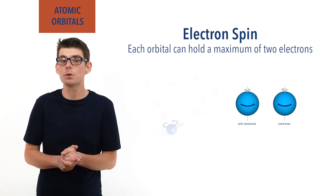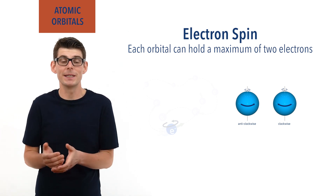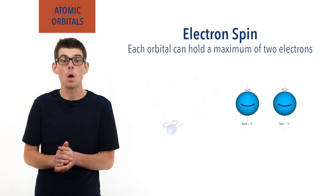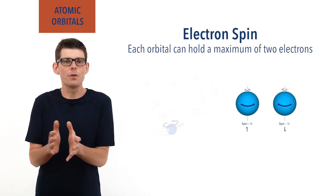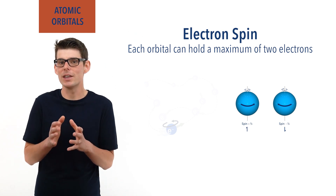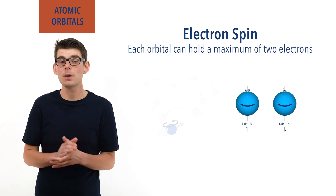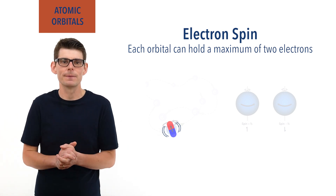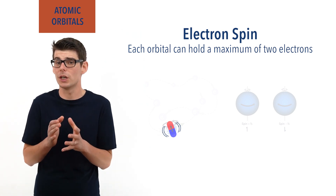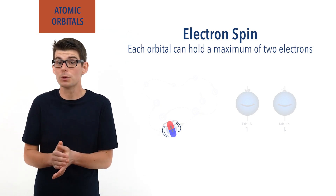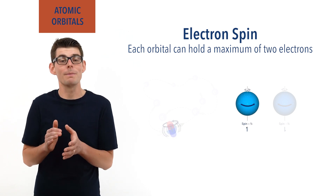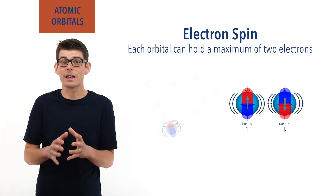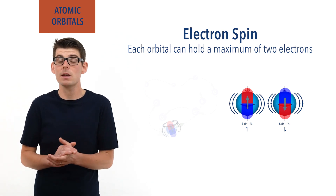Instead, we describe the two possible ways electrons can spin as spin up and spin down, written as positive half and negative half, and shown on diagrams as a half arrow pointing up or down. Because electrons have a charge, as they spin they generate a very weak magnetic field. You can think of a spinning electron as being like a tiny bar magnet. Magnetic fields have a direction based on north and south. As a result, an electron that is spin up will have a magnetic field with an opposite direction to an electron that is spin down — it's like the tiny bar magnet gets flipped upside down if the spin of an electron changes.